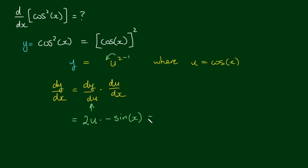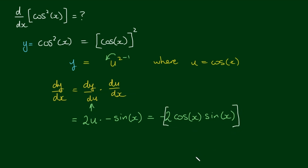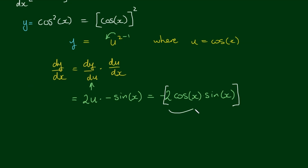So this equals, writing the negative out the front, negative 2 times u equals cos x times sine x. We can leave it at that, or we can realise that this expression — 2 times cos x times sine x — has a double angle identity. And that is, 2 times cos x times sine x can be written as sine of 2x.